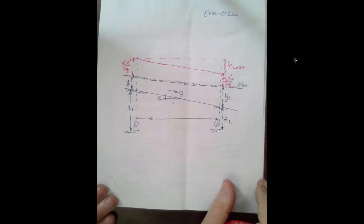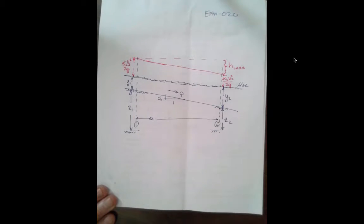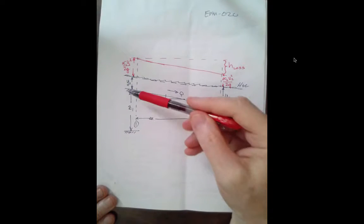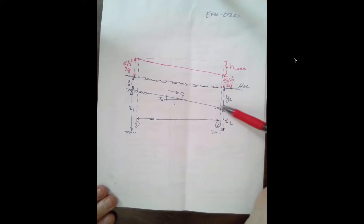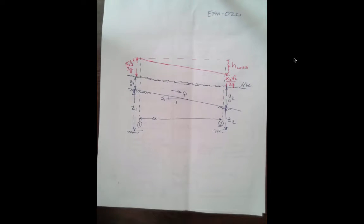It's slightly different than the one in the book, but it's conveying the same information. By convention, we reference everything to the bottom of the channel. So that plays the same role as the centerline of a pipe did in pipeline flow.